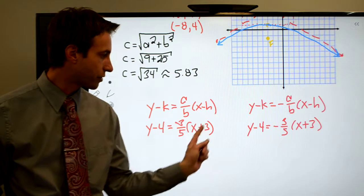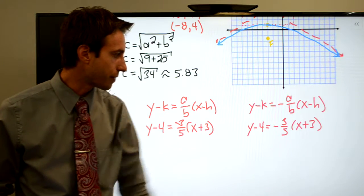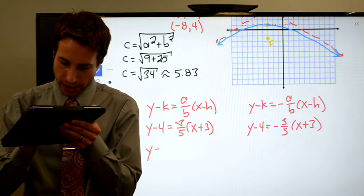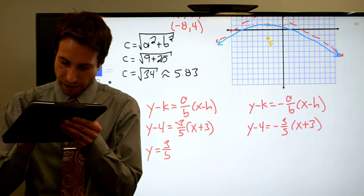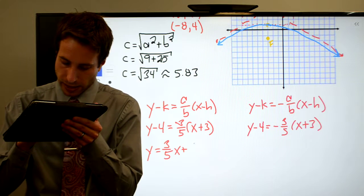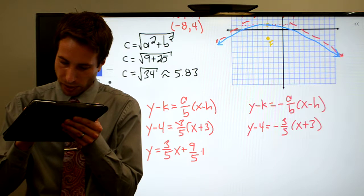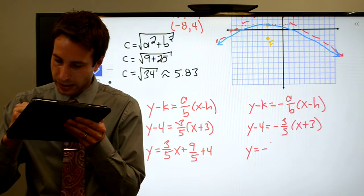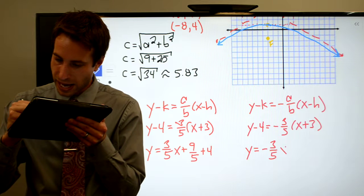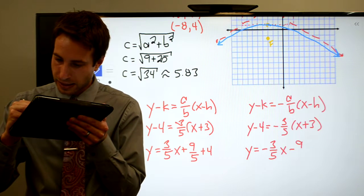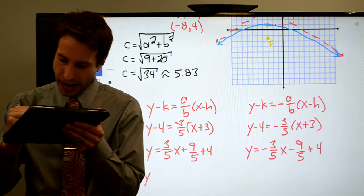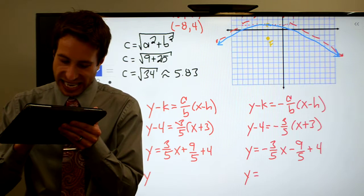So I've got to distribute the 3 fifths through the parentheses, distribute the negative 3 fifths through the parentheses, add 4 to the other side. I wind up with y is equal to 3 fifths x plus 9 fifths plus 4. y is equal to minus 3 fifths x minus 9 fifths plus 4. You do all that. I would leave it as a decimal.